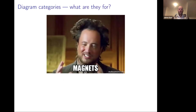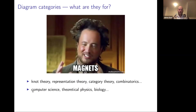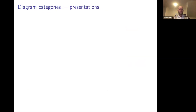These structures come up in theoretical physics — I had a chance to chat with Paul Martin, one of the co-discoverers, who explained they come from studying magnets. After their introduction they turned up everywhere: Temperley-Lieb algebras and categories appear in knot theory, Brauer algebras were introduced by Brauer in representation theory, and they appear in semigroup theory as well. Personally, I just find these fun objects to work with.